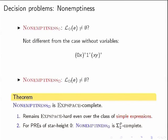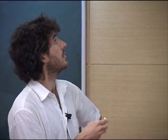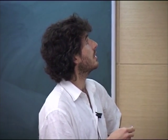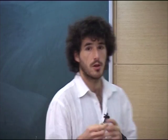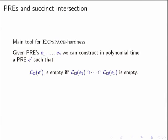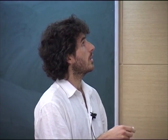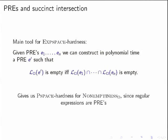One of the key technical tools we use for the hardness proof is quite interesting on its own: given a set of parameterized expressions, we can construct in polynomial time a single parameterized expression that is empty if and only if the intersection of all of them is empty. Notably, this is impossible for plain regular expressions — you cannot construct this in polynomial time with regular expressions. We use this tool to derive the space hardness by reduction from the regular expressions case.